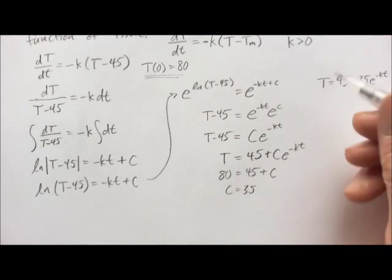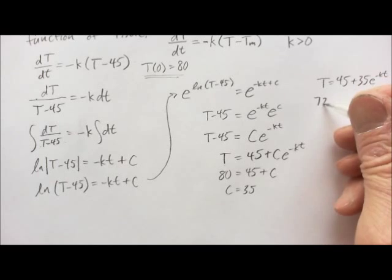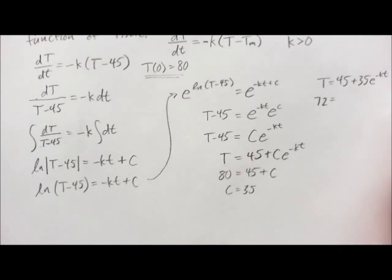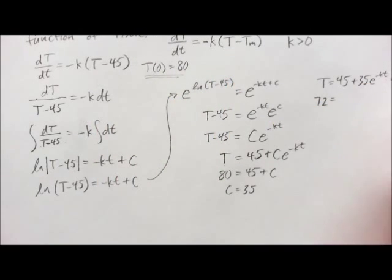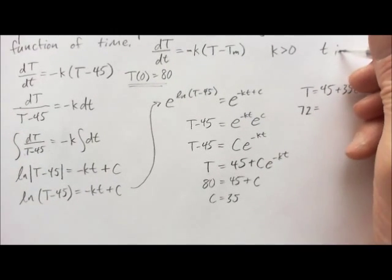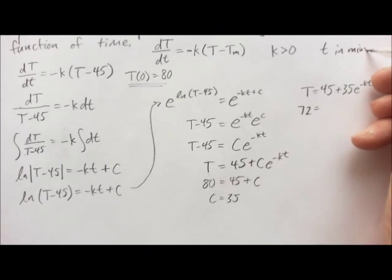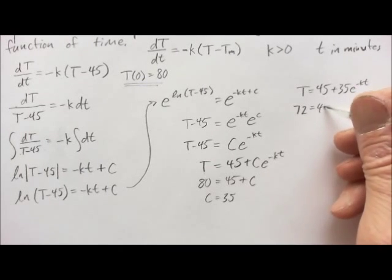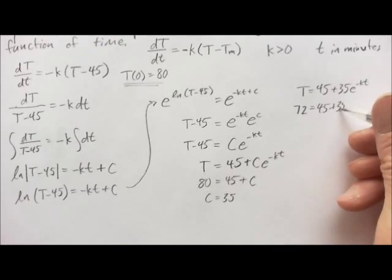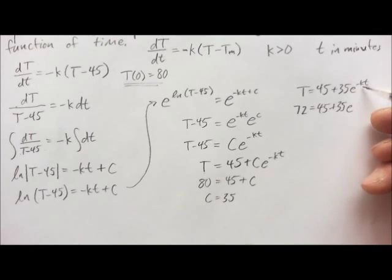Now, to find K, we can put in 72 for our temperature, and we'll go with time. I didn't say so up here, but our information was given in minutes, so we'll assume little t is in minutes. So, at this point, then we've got 72 equals 45 plus 35 E. We're going to put 10 in for our T, so we have E to the minus 10K.